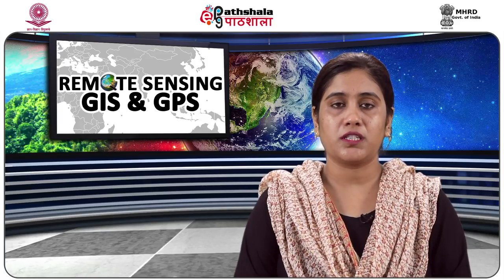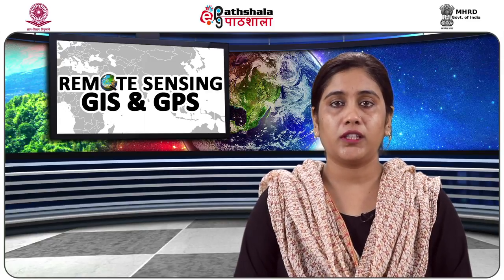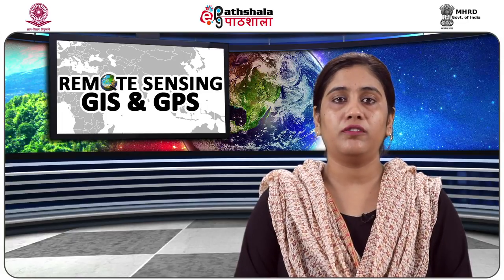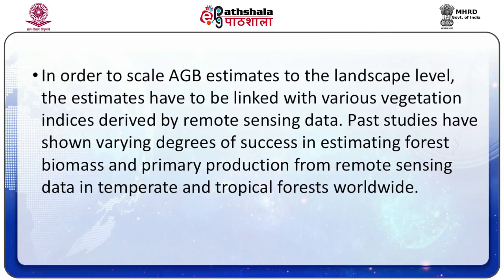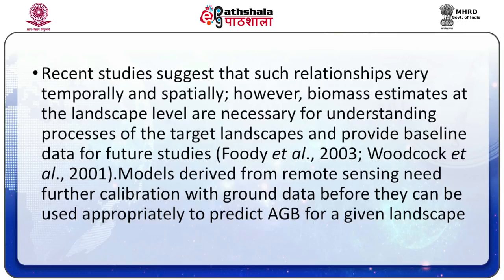Numerous regression models have been developed to estimate above-ground biomass in the Great Lakes region, while three models are accurate at tree, plot and stand levels. They are limited when considering spatial pattern analysis of above-ground biomass across the landscape. In order to scale above-ground biomass estimates to the landscape level, the estimates have to be linked with various vegetation indices derived from remote sensing data. Past studies have shown varying degrees of success in estimating forest biomass and primary production from remote sensing data in temperate and tropical forests worldwide. Models derived from remote sensing need further calibration with ground data before they can be used appropriately to predict above-ground biomass for a given landscape.